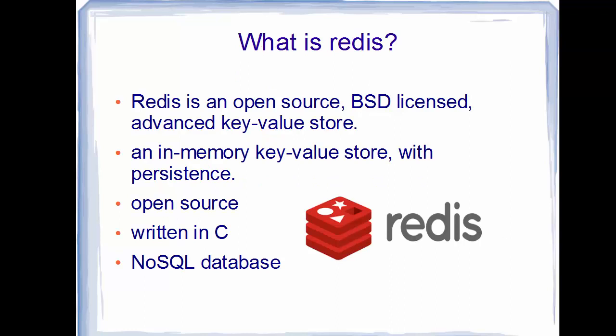Redis is an open source BSD licensed advanced in-memory key-value store where keys can contain data structures such as strings, hashes, lists, sets, and sorted sets. It's an in-memory key-value store with persistence, which means Redis can be used as a database, a caching layer, or a message broker. It is written in C and it's a NoSQL database.